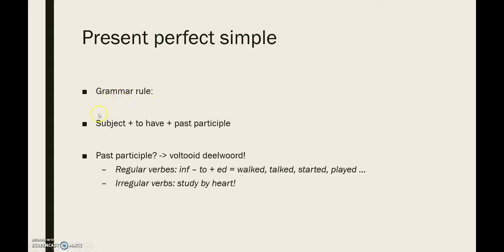Let's take a look at the grammar rule. You always have your subject, then you have 'to have' — which you conjugate — followed by the past participle. The past participle: for regular verbs, you always use the infinitive minus -to, plus -ed, which looks the same as the past simple: walked, talked, started, played. Now, as in Dutch, there are some irregular verbs and you need to study them by heart — there is no other way around it. Dus dat voltooid deelwoord: voor regelmatige werkwoorden voeg je -ed toe. Voor onregelmatige werkwoorden moet je die allemaal van buiten leren.